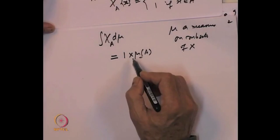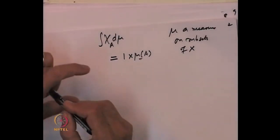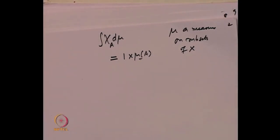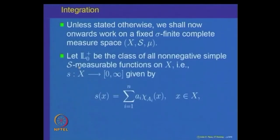Let us look at functions which are going to be linear combinations of indicator functions — we start looking at the integral of non-negative simple measurable functions. We fix our notation: from now onwards we work on a measure space (x, S, mu), where x is a set, S is a sigma-algebra of subsets of x, and mu is a measure defined on S. This is a complete measure space, meaning all sets A such that mu of A equals 0 implies that A and all its subsets are inside S.